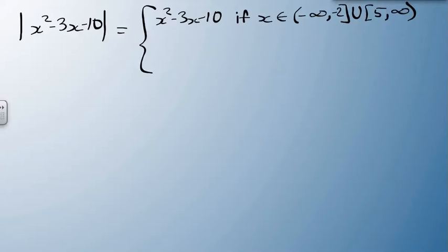We have to flip it, so essentially we're putting a negative on it, if x is an element of, so if it's anywhere in between minus 2 and 5.